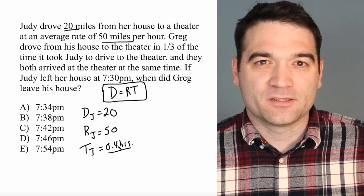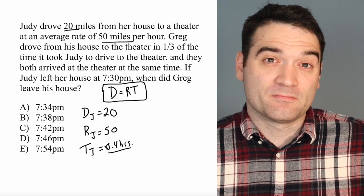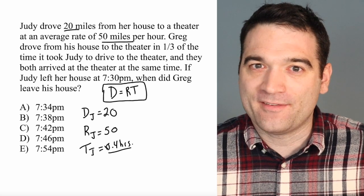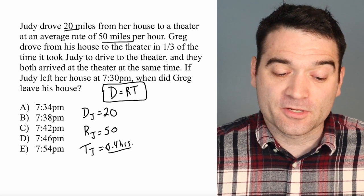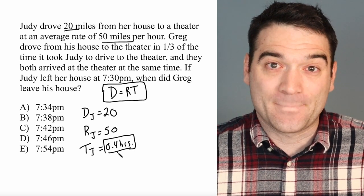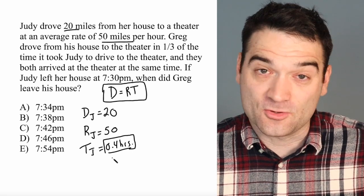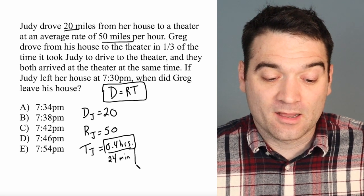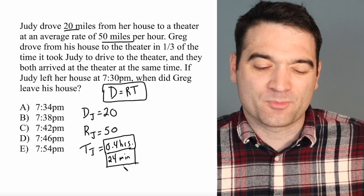Is this 40 minutes? Think about this — it's not, and here's why. Consider 0.5 hours. That's half an hour, and half an hour is not 50 minutes — it's 30 minutes. So to convert from hours to minutes, I need to multiply by 60. So 0.4 times 60 — you can use your calculator for that — is 24 minutes. Getting units right is very, very important. So I'm expressing this both as hours and as minutes, because we're probably going to have to use this.